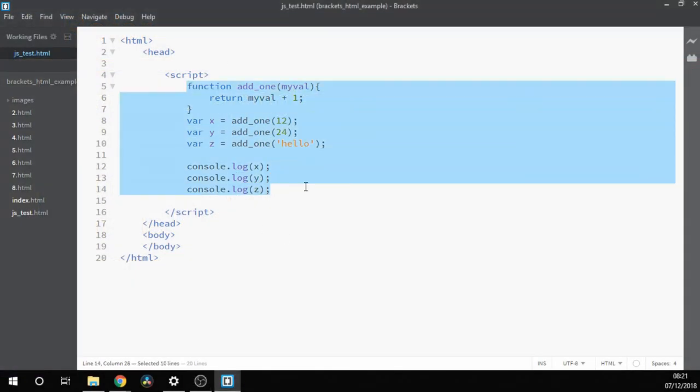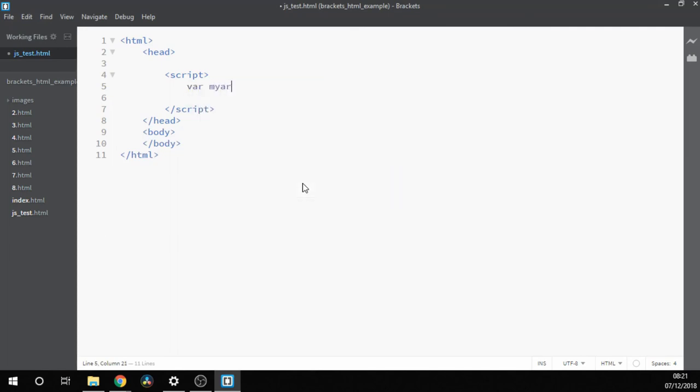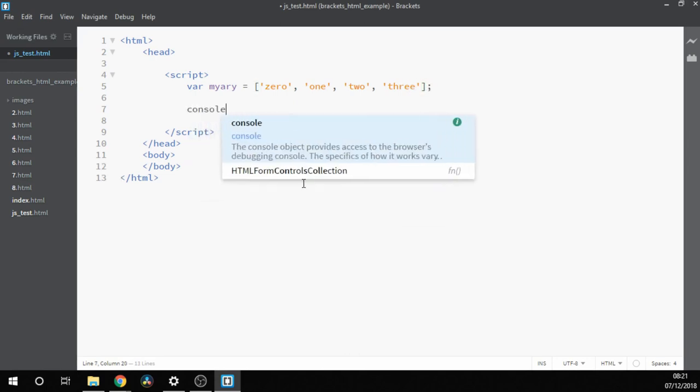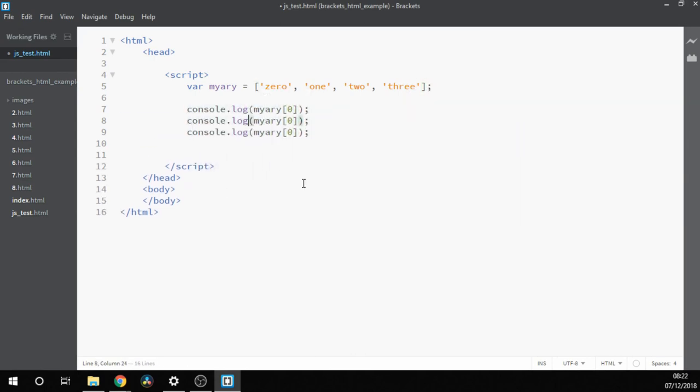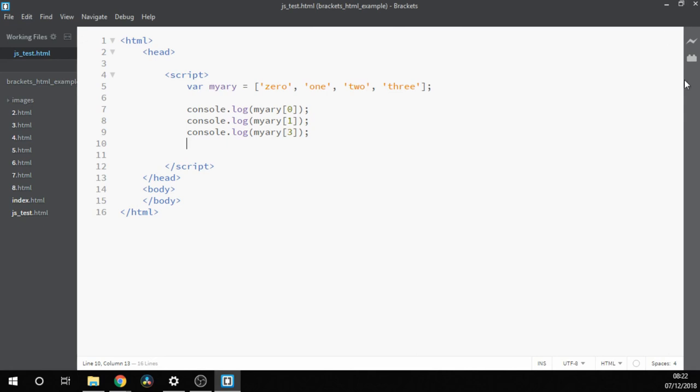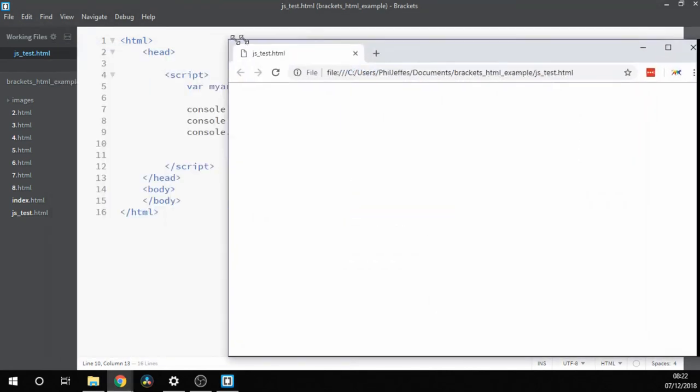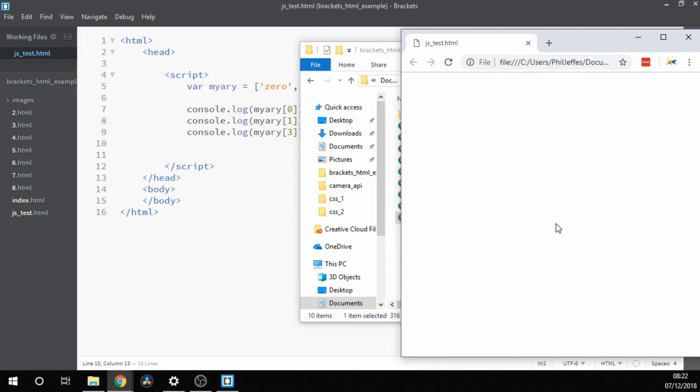So if we go back to our brackets example, we can have a go with arrays ourselves. And now when we run that, we can right-click, show the console, and we can see it's output zero, one, and three, as we'd expect.